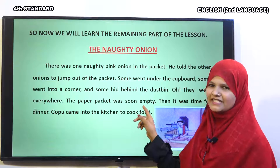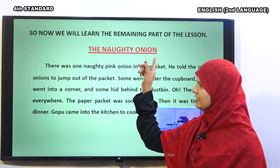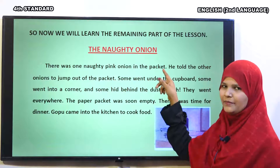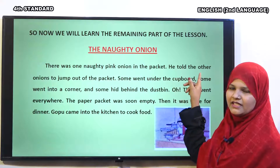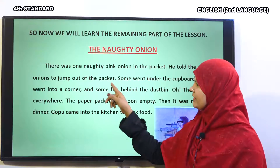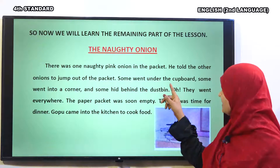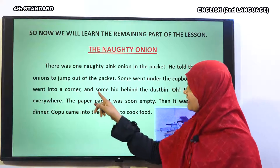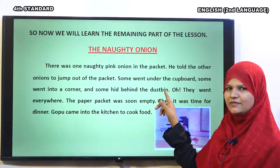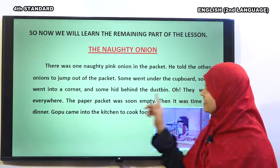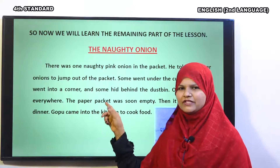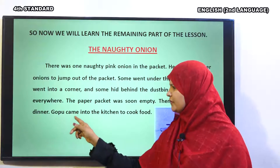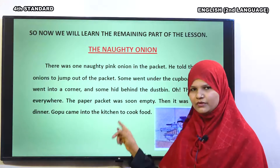Let us read once again. The Naughty Onion. There was one naughty pink onion in the packet. He told the other onions to jump out of the packet. Some went under the cupboard. Some went into the corner. And some hid behind the dustbin. They went everywhere. The paper packet was soon empty. Then, it was time for dinner. Gopu came into the kitchen to cook food.